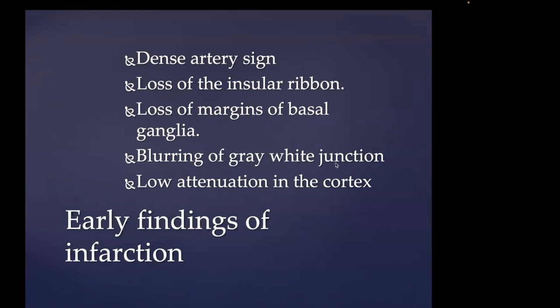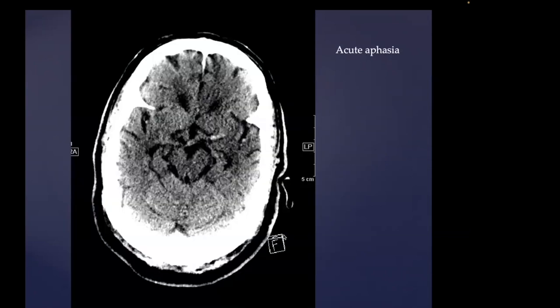We're also going to look at loss of margins of the basal ganglia, particularly the lentiform nucleus — an early sign of ischemia. Blurring of the gray-white junction: because white matter has lower attenuation than cortex, when they have the same attenuation, that implies the cortex has decreased in attenuation, which is common with early ischemia. Finally, low attenuation in the cortex itself usually appears later — after the first three to four hours from symptom onset. This is my approach to early findings of infarction.